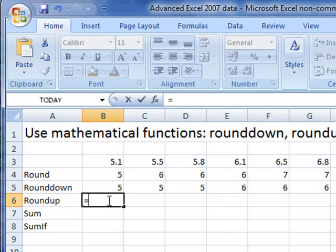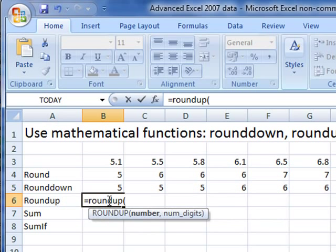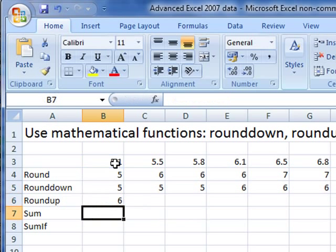Round up next. Works in exactly the same way. Equals round up, open our brackets. What number do we want to round up? It's this one in the cell B3, comma, how many decimal places? I'm going to keep it simple. I'm just going to use 0 again. Close the brackets, press the enter key.